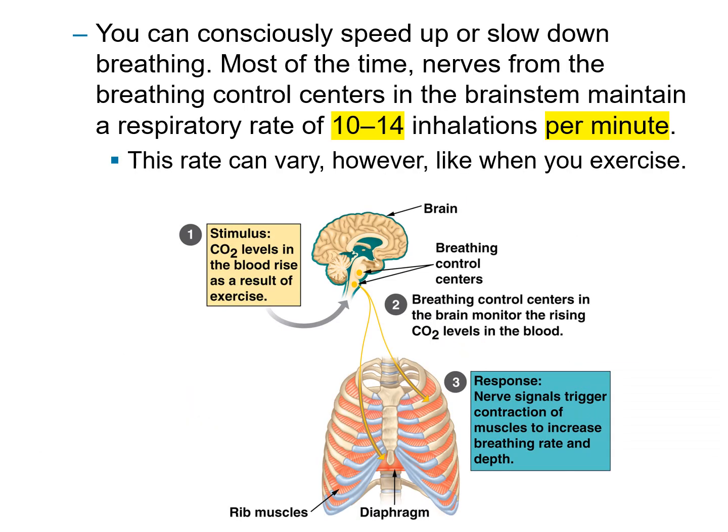You can consciously speed up or slow down breathing. Most of the time, nerves from the breathing control center in the brainstem maintain a respiratory rate of 10 to 14 breaths per minute, though this rate can vary when you exercise.